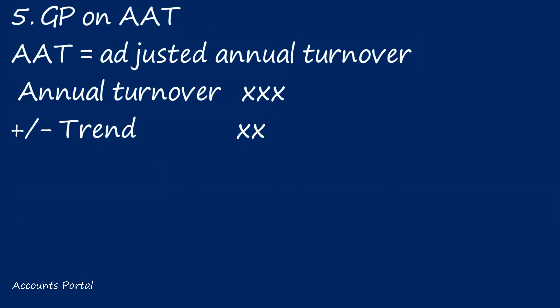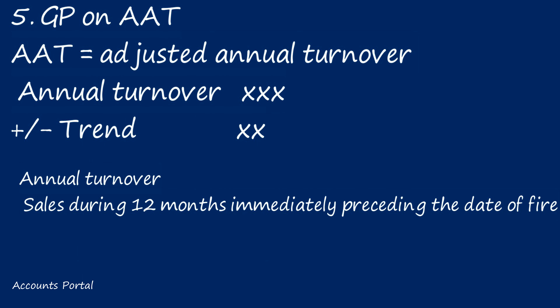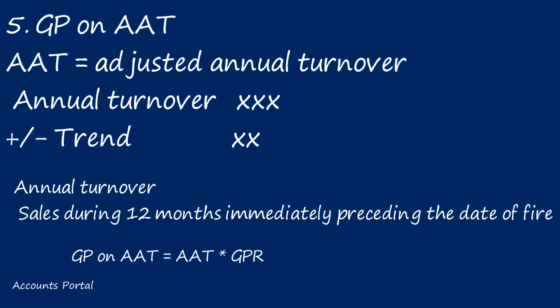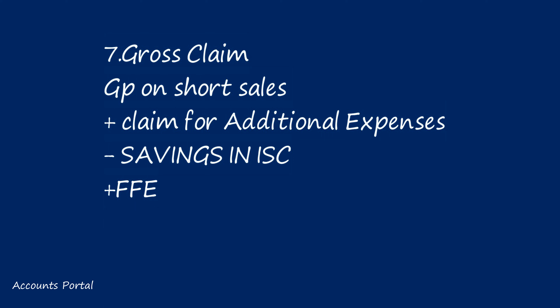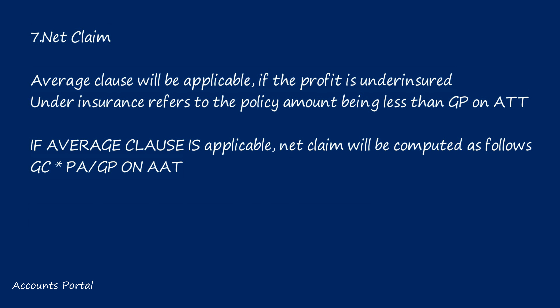Step five: gross profit on Adjusted Annual Turnover — annual turnover plus or minus trend gives the AAT, which is sales during 12 months immediately preceding the date of fire; GP on AAT equals AAT into gross profit ratio. Step six: claim for additional expenses is the least of — additional expenses incurred; additional expenses into gross profit on AAT divided by gross profit on AAT plus uninsured standing charges; and gross profit on sales generated due to additional expenses. Step seven: gross claim equals GP on short sales plus claim for additional expenses, less savings in insured standing charges, plus firefighting expenses.